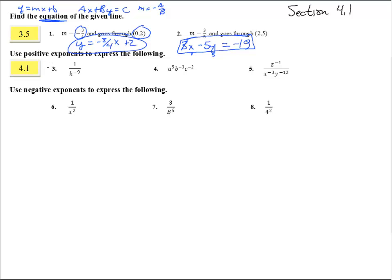Number 3: use positive exponents. Here we have a negative exponent — that negative exponent moves that term up to the top of the fraction and it becomes k to the ninth. That's what a negative exponent does: it flips it to the other part of the fraction. So the 8 to the fifth stays right there, but the other terms go down to the bottom as a positive 3 and a positive 2 in the denominator.